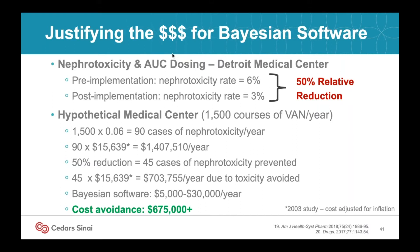Emily Heil and colleagues from Detroit Medical Center published their experience in switching from trough-based to AUC-based dosing. Post-implementation, they observed a 50% relative reduction in the rate of nephrotoxicity in patients receiving vancomycin.